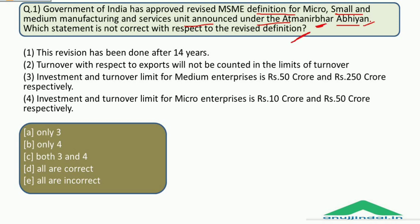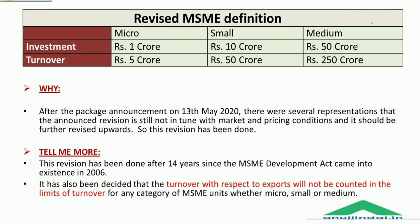While discussing the Atmanirbhar Abhiyan, we discussed a proposal to revise the MSME definition — that proposal has now been approved. For medium enterprises, the investment limit is now Rs. 50 crores and the turnover limit is Rs. 250 crores. Earlier at the time of announcement, investment was Rs. 20 crores and turnover was Rs. 100 crores — these limits have now been increased to Rs. 50 crores and Rs. 250 crores.